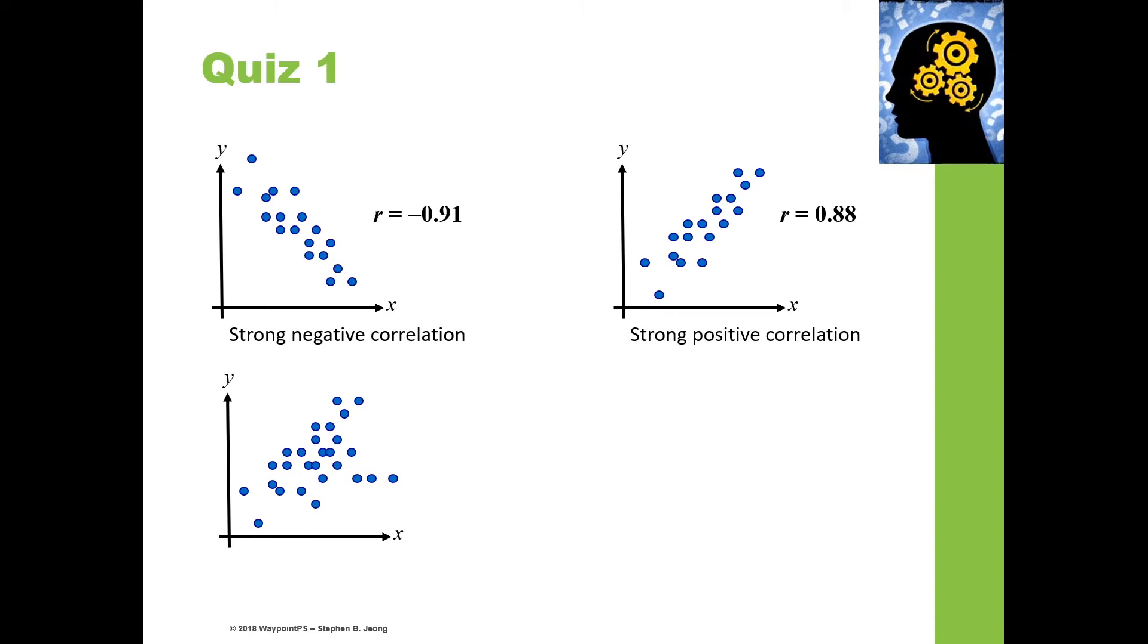And what about this one? You can see that x increases, y increases, but not as much as the second example. So we would expect a moderate positive correlation. The last example—you should guess by now what this is. It's near zero correlation because as x increases, we don't really know what happens to y. It's all over the place.